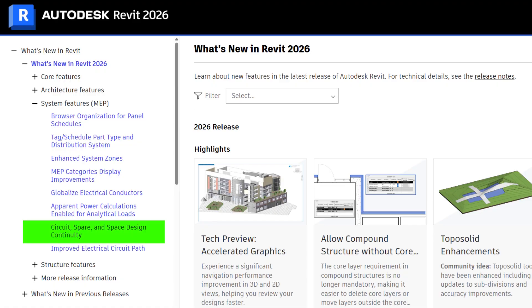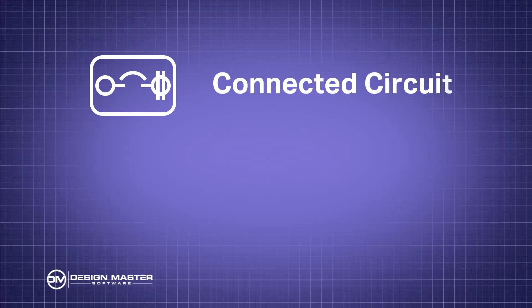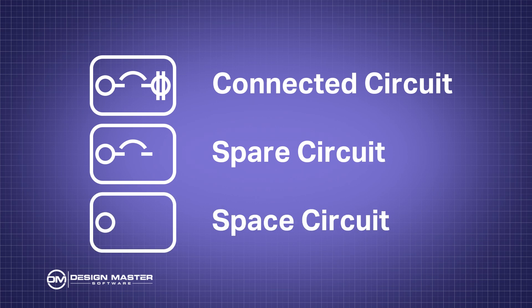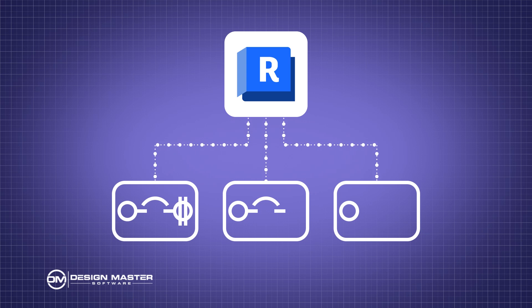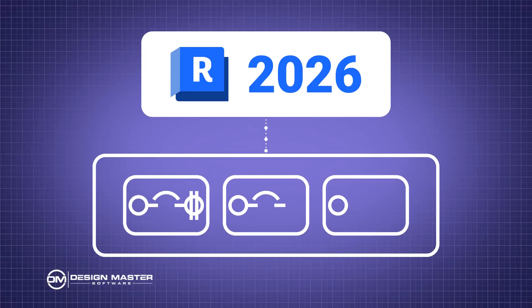The next feature is circuit spare and space design continuity. Previously in Revit, circuits with things connected were treated differently from spares and spaces. You could have shared parameters on circuits that had things connected, but spaces and spares were this weird thing — they didn't have shared parameters and didn't really show up in the project browser very well. They were circuits to you as the engineer, but Revit treated them very differently. In 2026, they've unified those, so circuits that are spares and spaces work the same way as circuits with things connected. This is actually a nice feature that lets you use spaces and spares better in your projects.